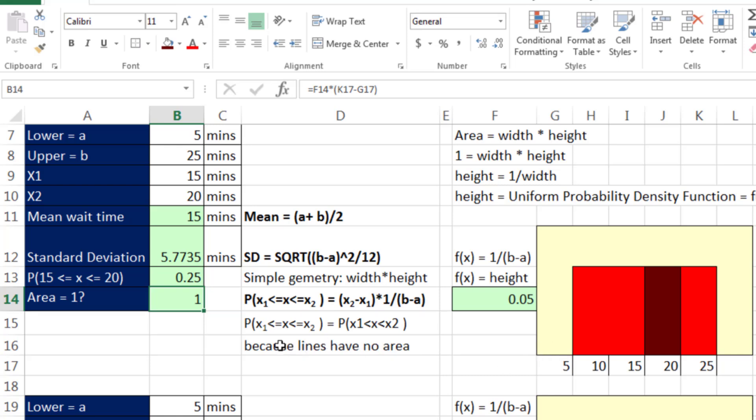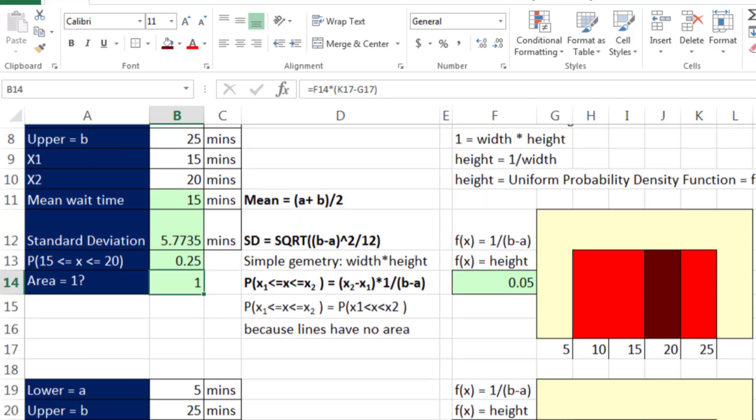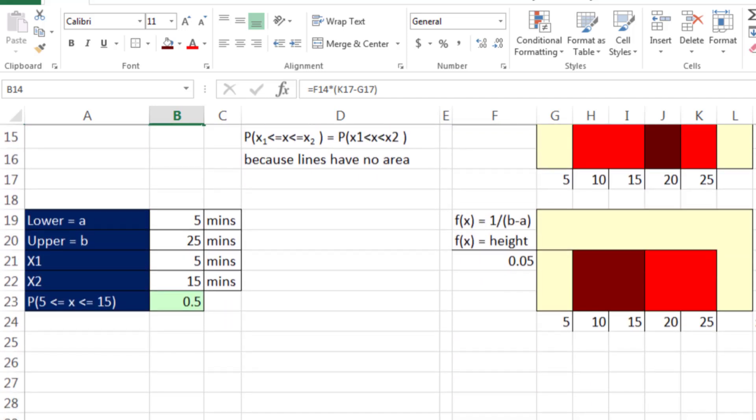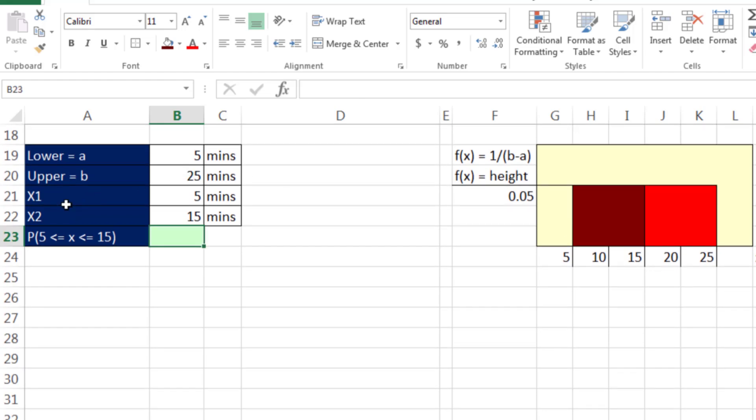Now remember, we're dealing with lines here. So this symbology here for greater than or equal to would be the same as that. It would be the same probability. All right, now let's scroll down and we can do a different example here. We want to calculate the probability between 5 and 15 minutes. It's all about geometry. So the height times the MAX for our interval minus the MIN. That will give me 10. So 10 times 0.05 would be 0.5. So the probability that we wait between 5 and 15 minutes is 0.5.